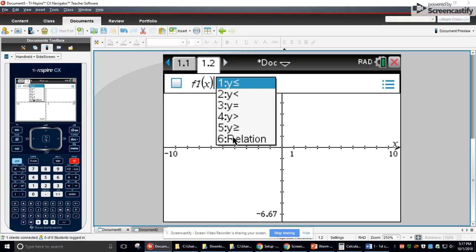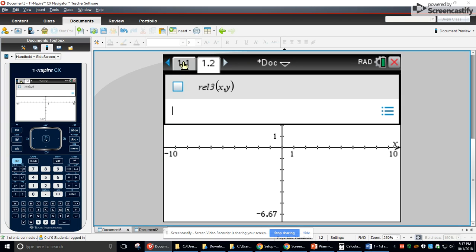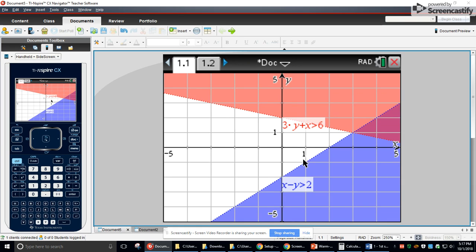When you hit delete, you can type in something, and this is if it's already in y equals form. Now, if it's not, just go to relation, and then just type in whatever you want. So these were not in y equals or yn equals form.